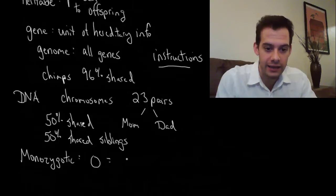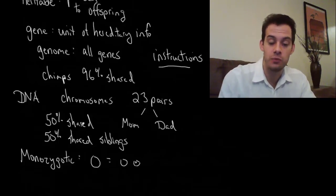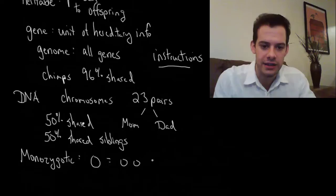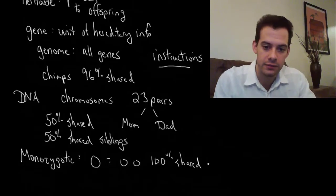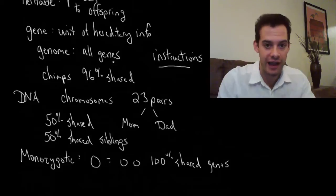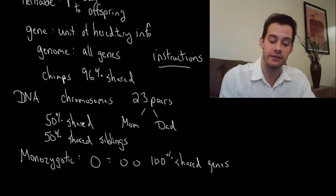This one egg splits into two and now you get two people but they have exactly the same information. They each got that same sperm cell, same egg cell. So this means they're going to have 100% shared genes. When it comes to which version of the gene, do they have the mom version or the dad version for every gene, it's going to be the same.